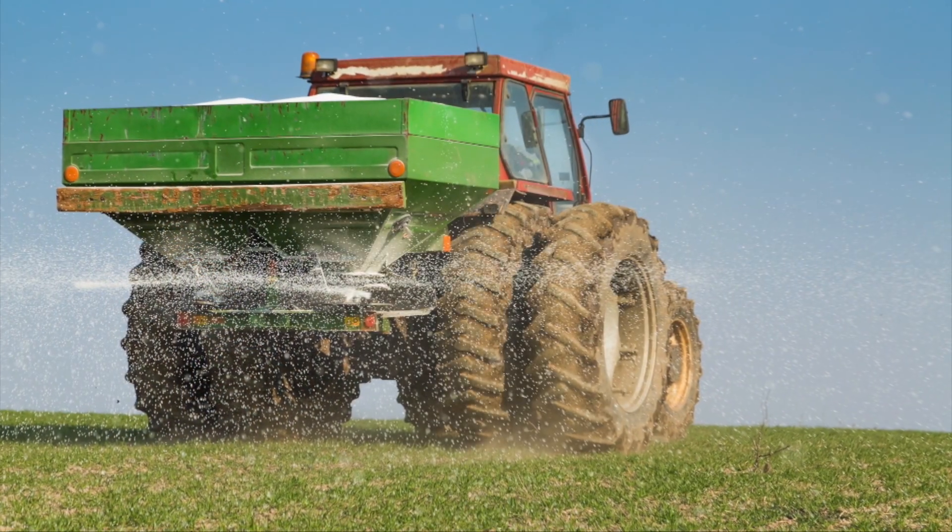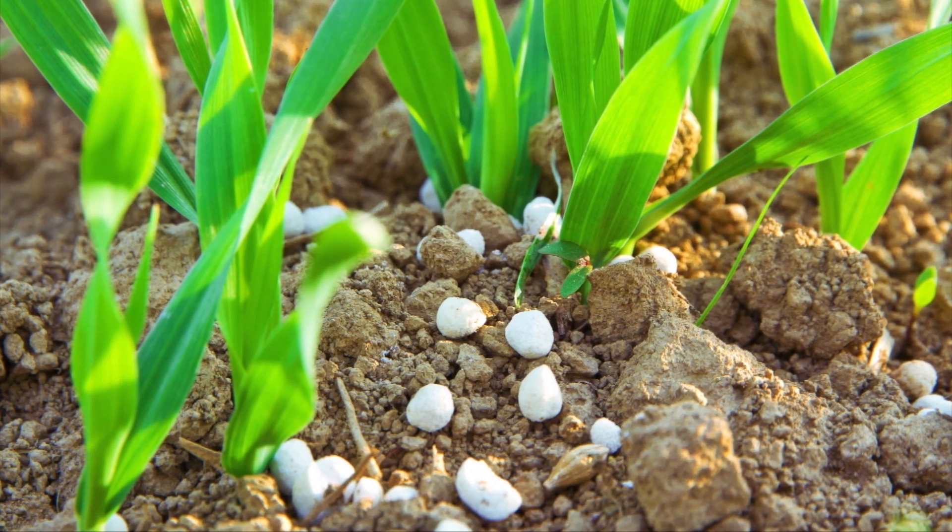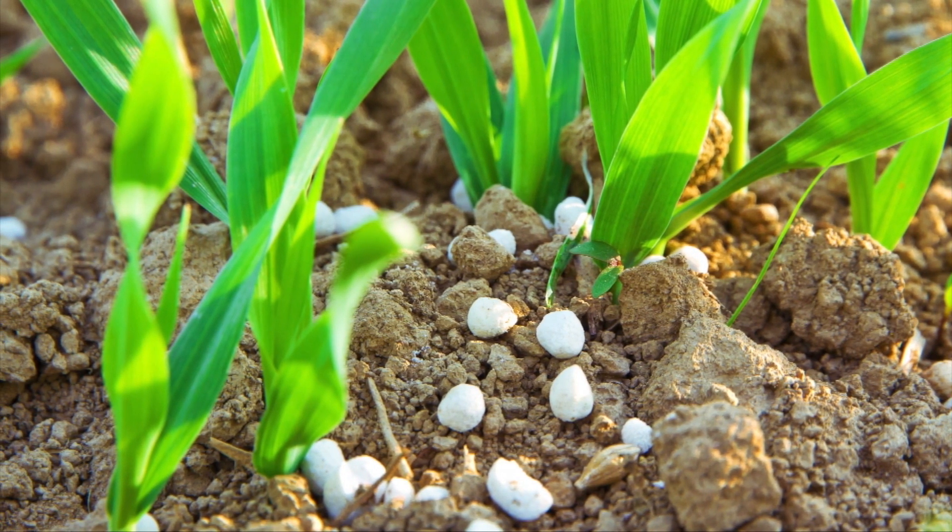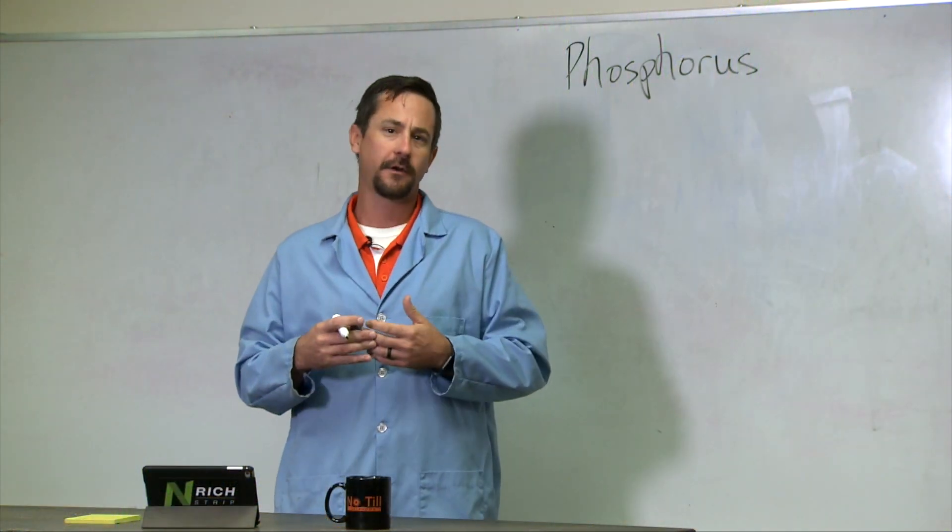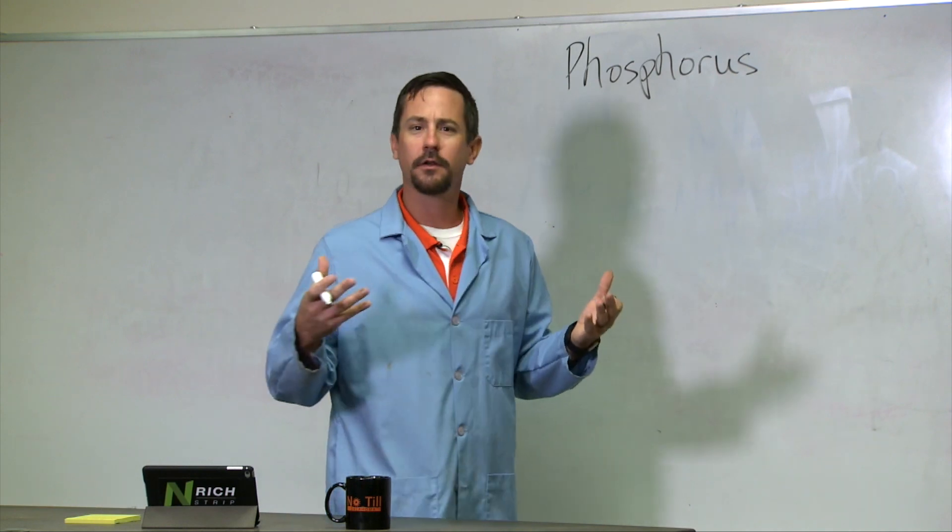Many would say that phosphorus is the powerhouse of the plant. It's used for photosynthesis and energy transfer, and it's involved with ADP and ATP. Basically, if you want to call it a superhero, it's that energy superhero.